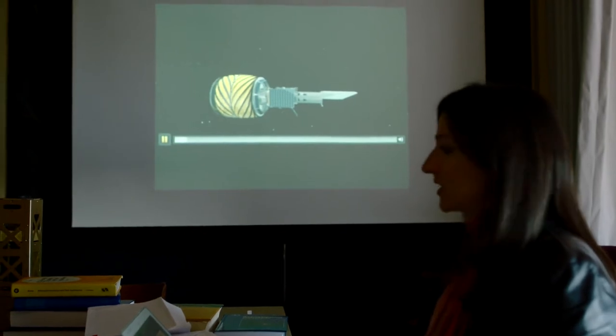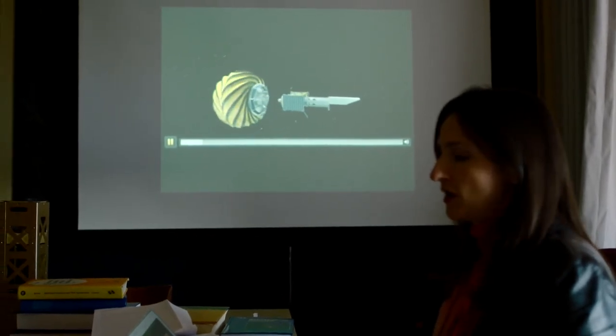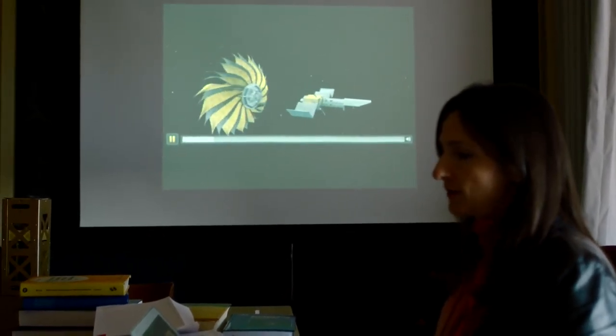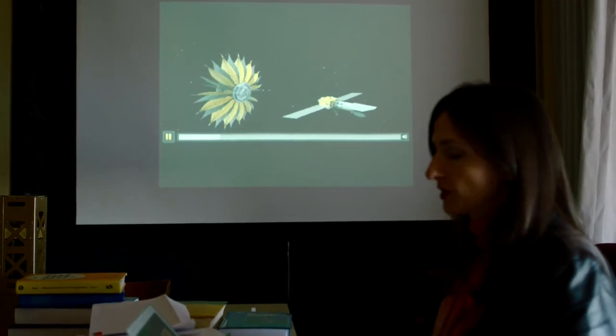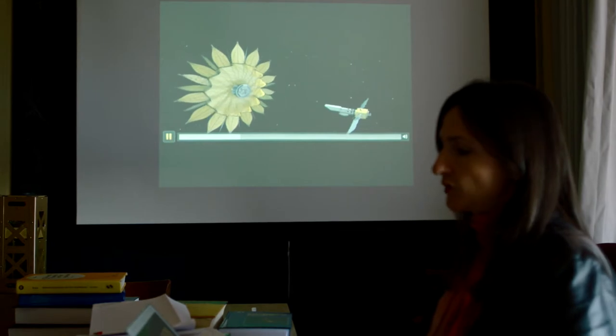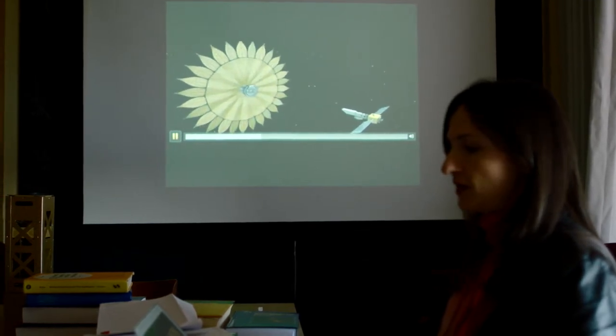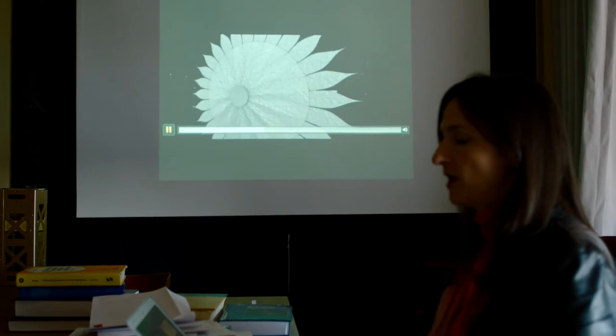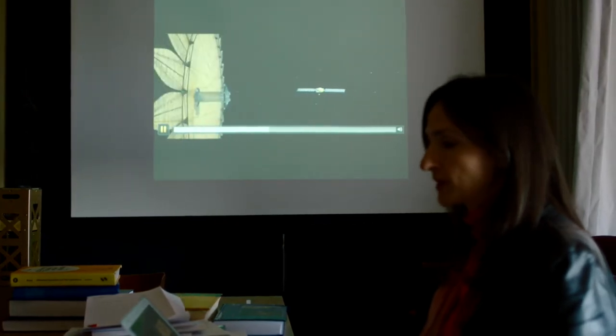This is showing you the starshade and telescope launching together. They separate in space and the starshade petals unfurl from their stowed position. The central truss will expand for the second stage of deployment of the petals. There's the starshade at tens of meters in diameter. And it has to be made so precisely.